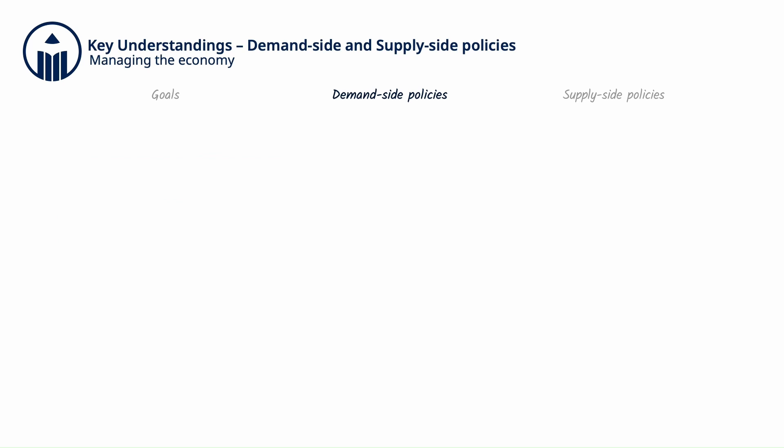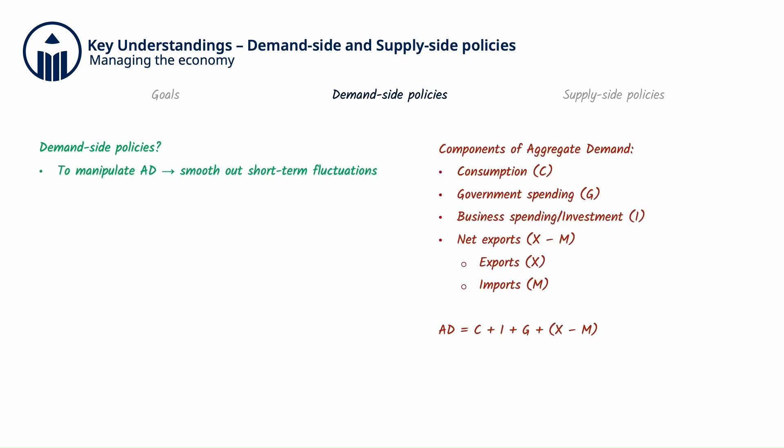So, how do governments manage their economies? Governments manipulate aggregate demand (AD) with demand-side policies, or they manipulate aggregate supply (AS) with supply-side policies. Demand-side policies are a set of policies used to manipulate AD to smooth out short-term fluctuations in economic activity.